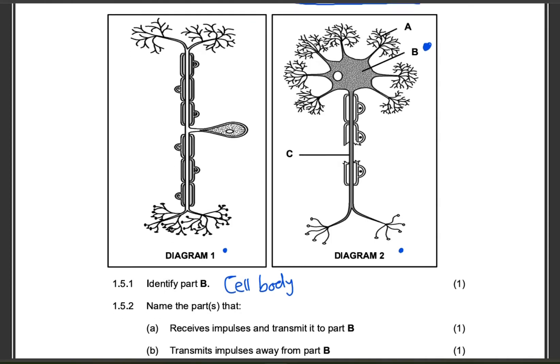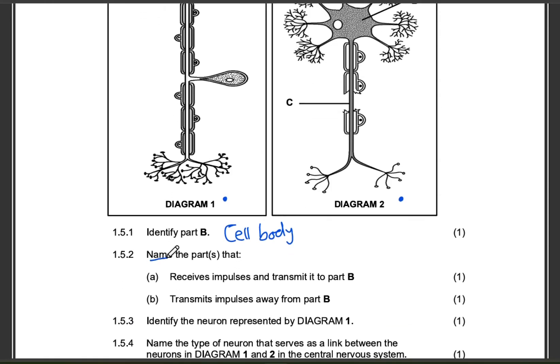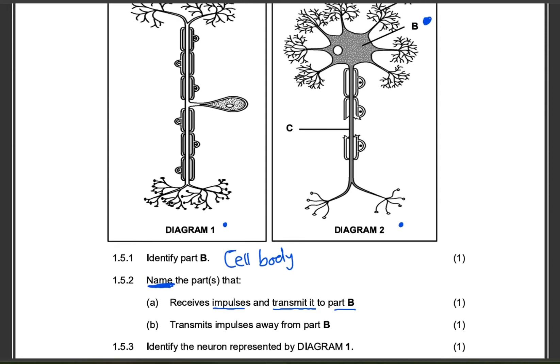The second question is asking us to name — and this is very important. Read the question so that you know exactly whether they are asking you to name, give the letter, the function, or explain. They are asking us to name the part that will receive impulses and transmit those impulses to part B, meaning towards the cell body. That's obviously the dendrite.